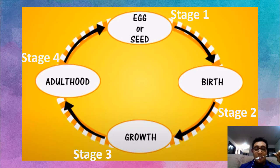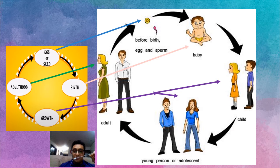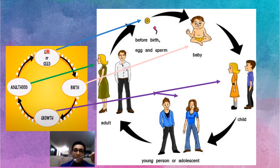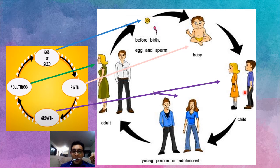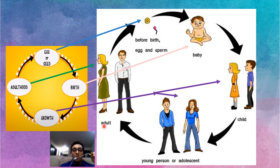For example, for a human: a baby is at the birth stage. But before the baby, we have a human egg. After baby, we have child and young person — these two are the growth stage, getting bigger and bigger. After this, we have adult.